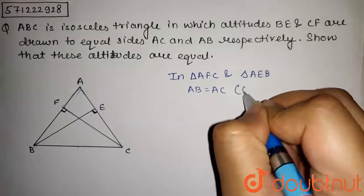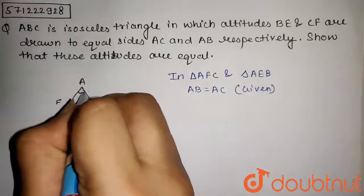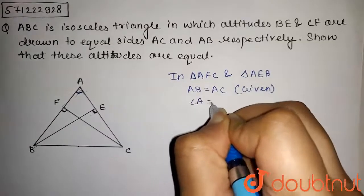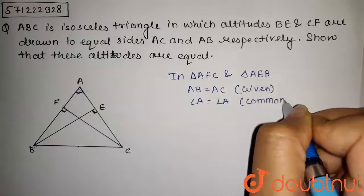So these are equal given in the question, and also this angle, that is angle A, is equal to angle A as this is a common angle of both the triangles.